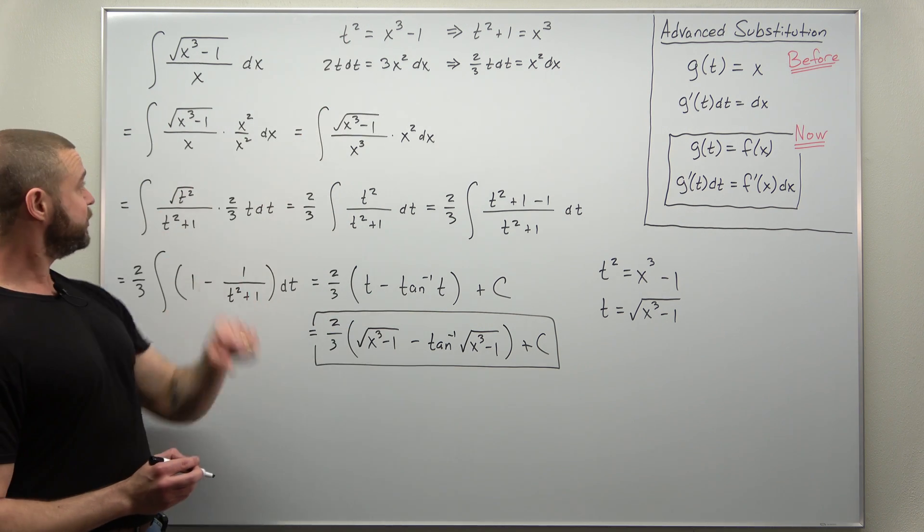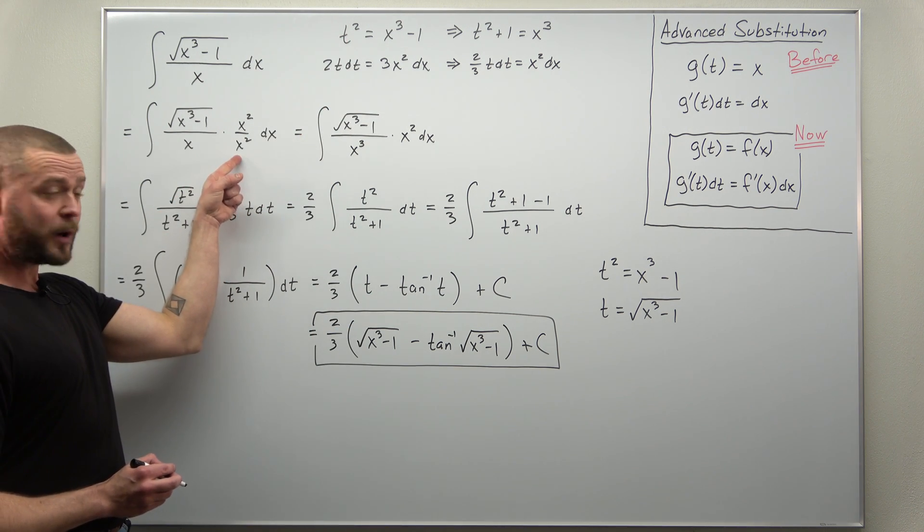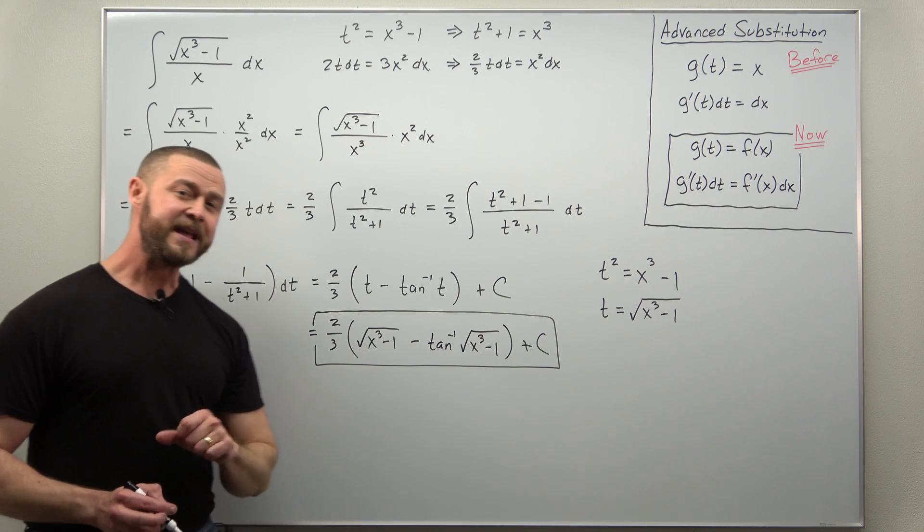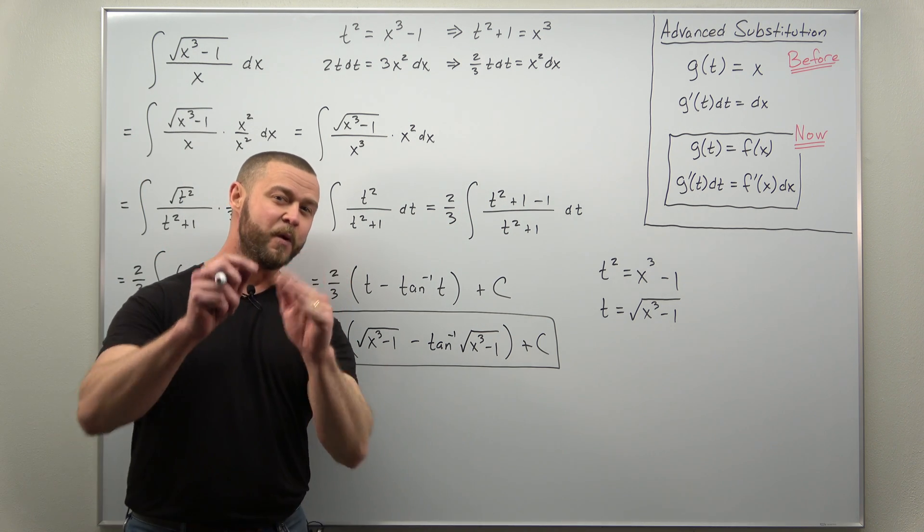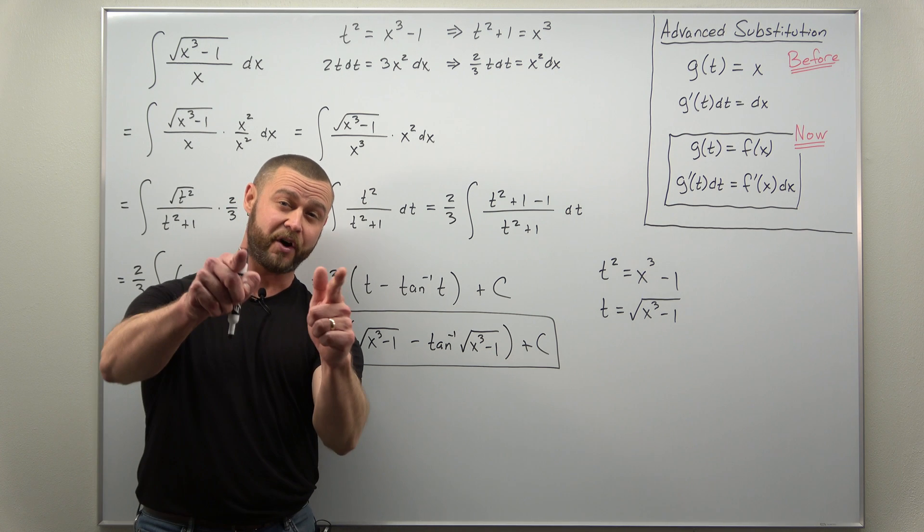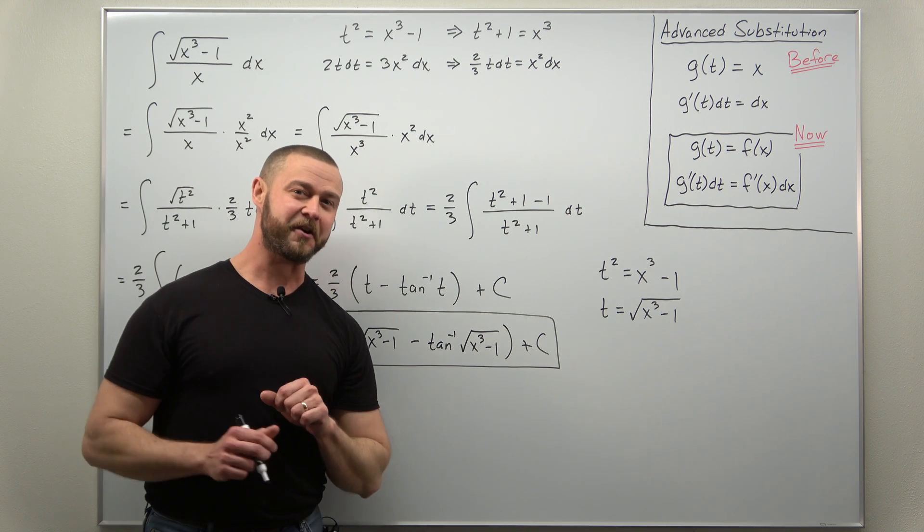So advanced substitution, multiply by 1, add 0, and we get our antiderivative with a little bit of creativity, which is the whole point of the art of integration.